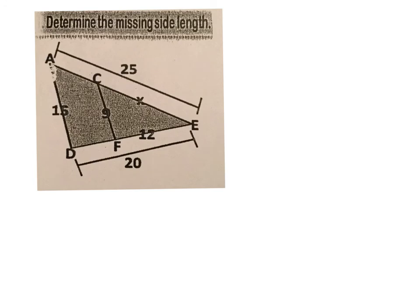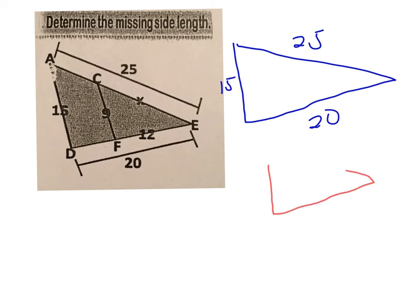Before we begin, let's go ahead and draw our two separate figures. I'm going to make this my largest one. I know that's a 25, that's a 20, and this is a 15. And I'm going to go ahead and draw the smaller one. This is a 9, because it's right here. This is a 12, right there. And this is what I'm looking for, my missing side.